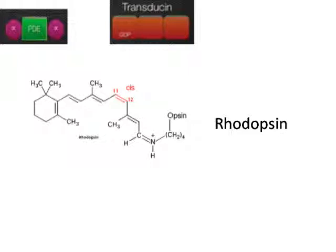Inside the rods we have three main components. Rhodopsin is the visual pigment found within the rods. Rhodopsin is made up of the protein opsin and retinol, which is in its cis conformation. Retinol is a slightly processed version of vitamin A, which explains part of the reason why vitamin A helps with vision.